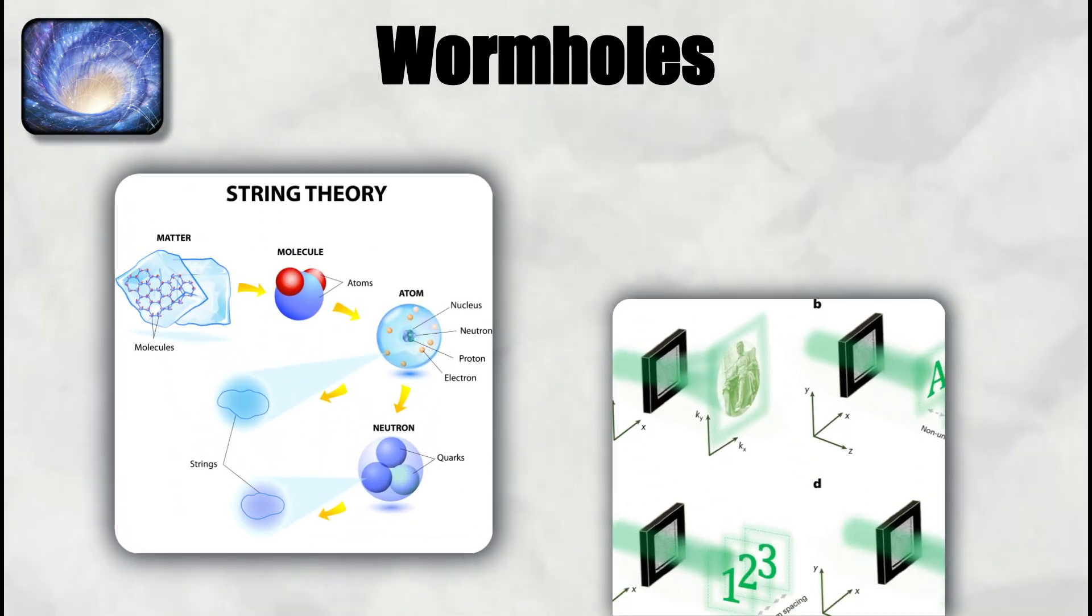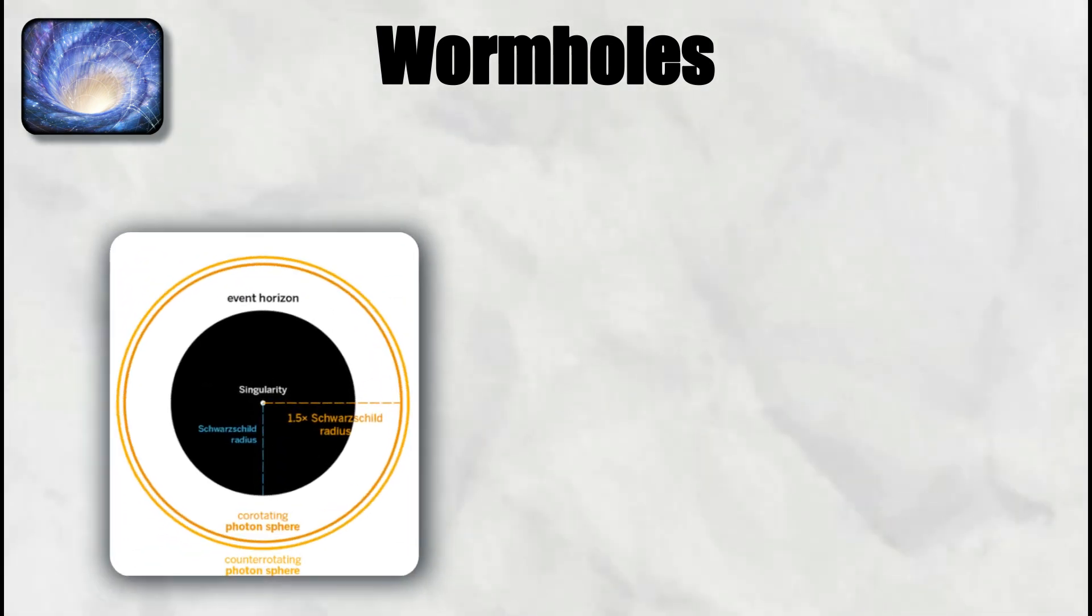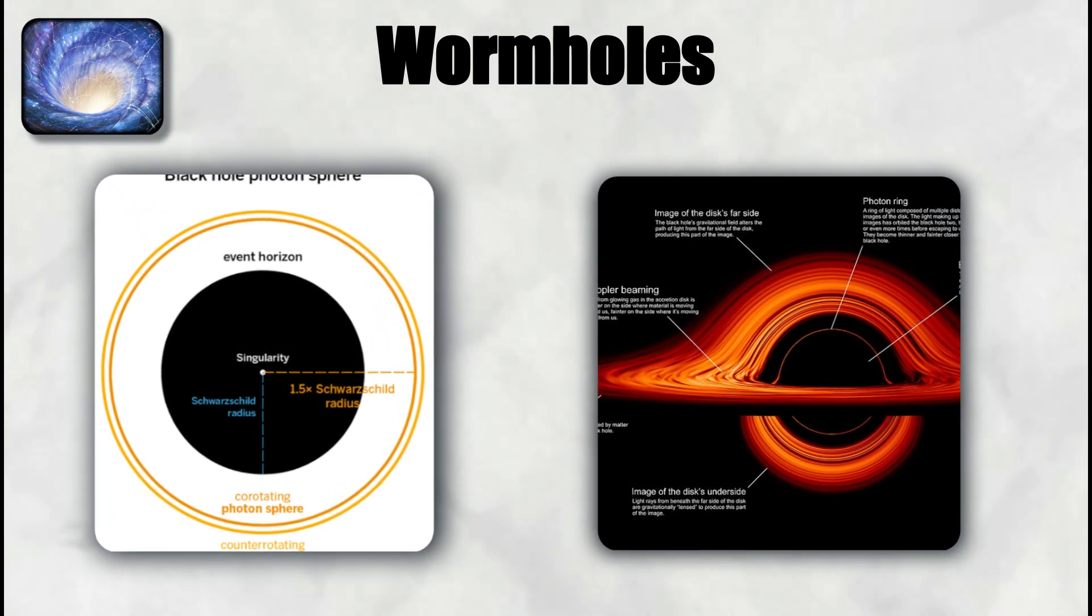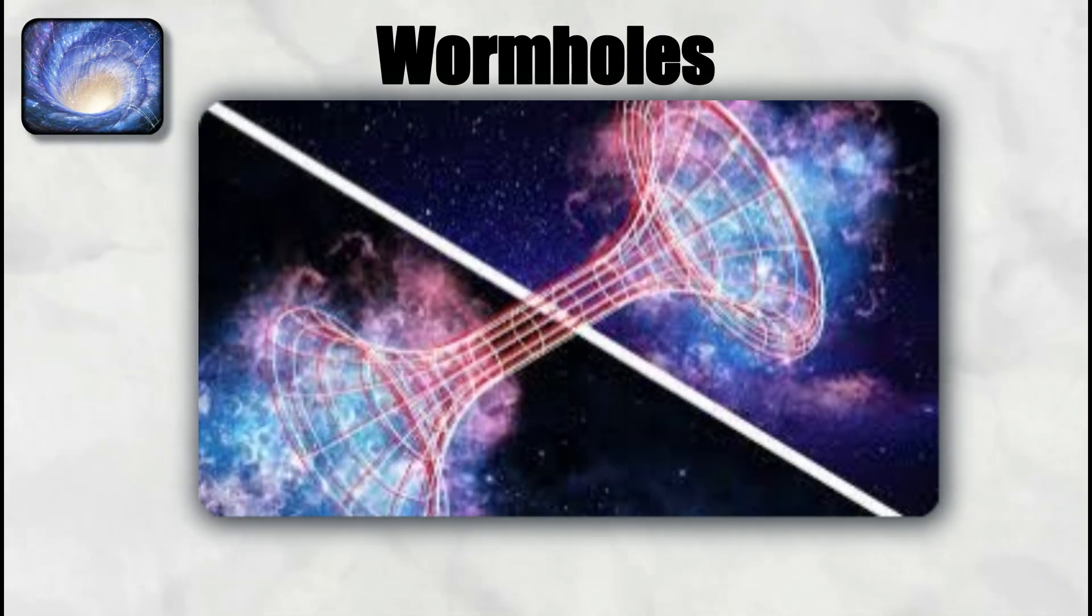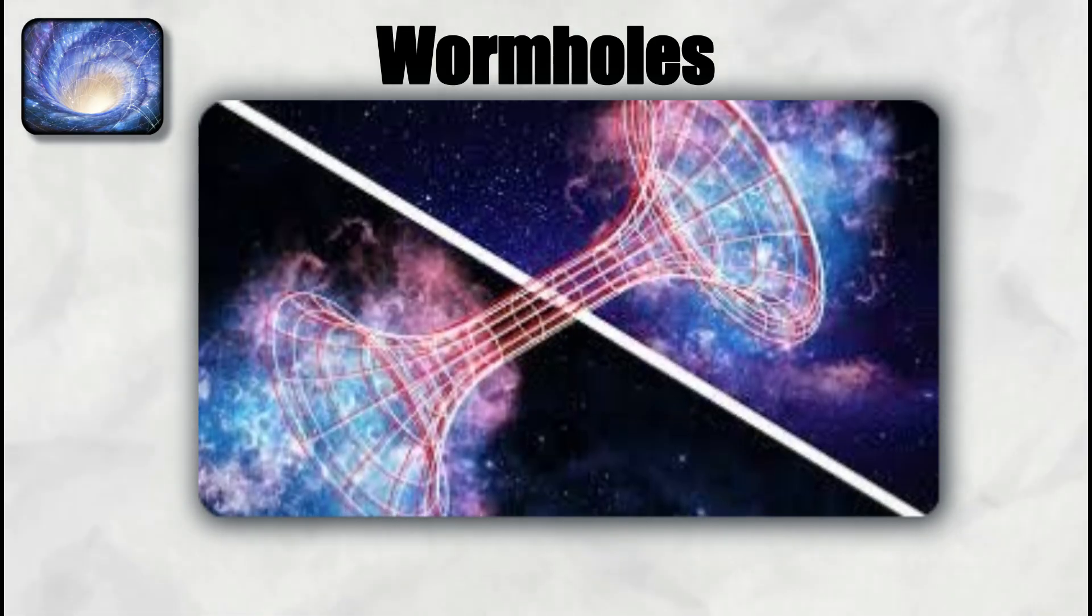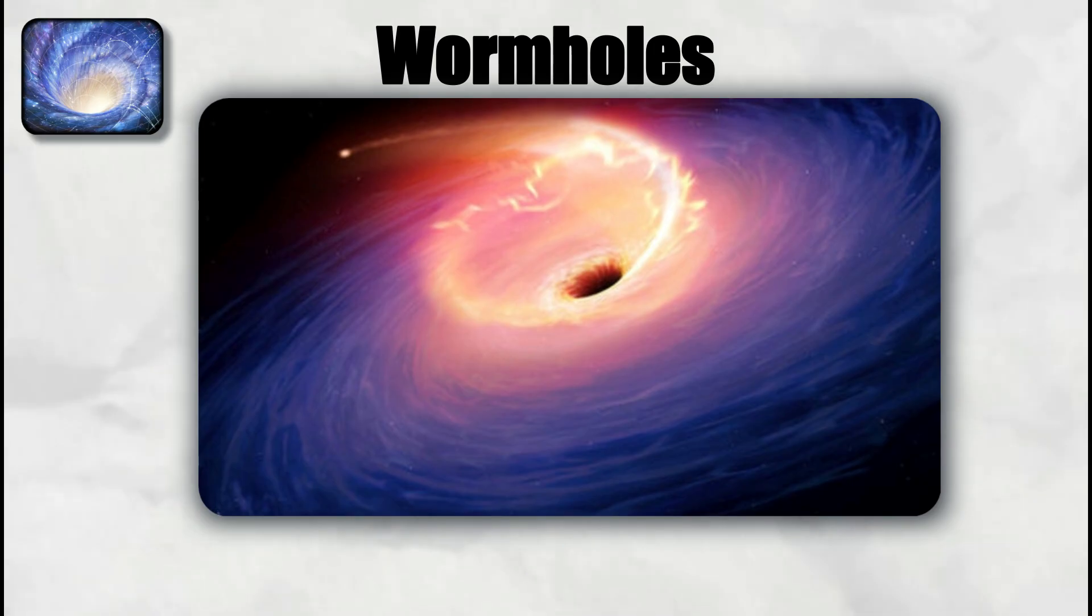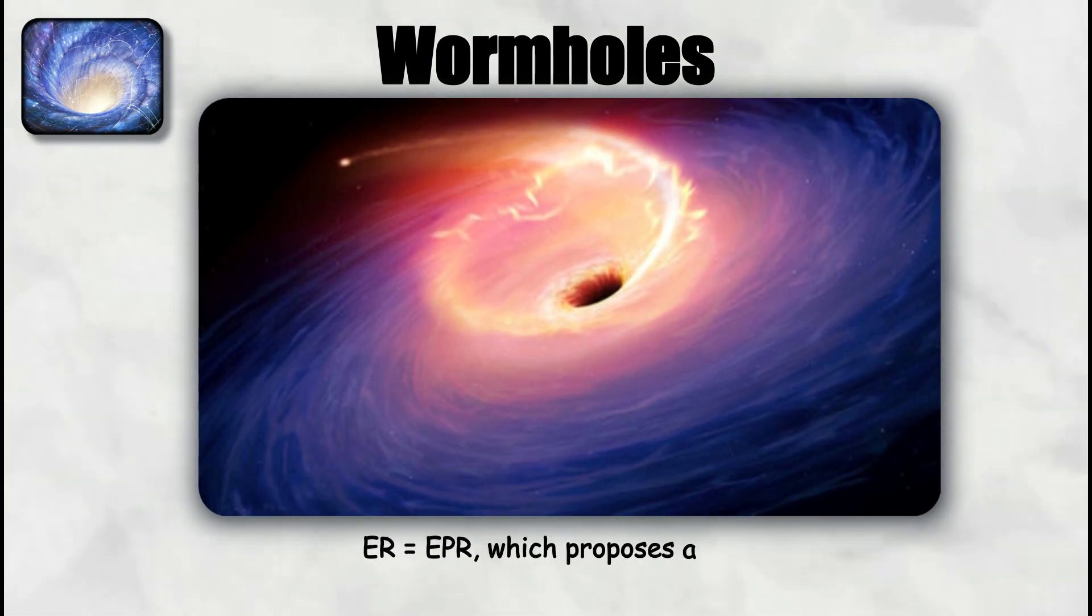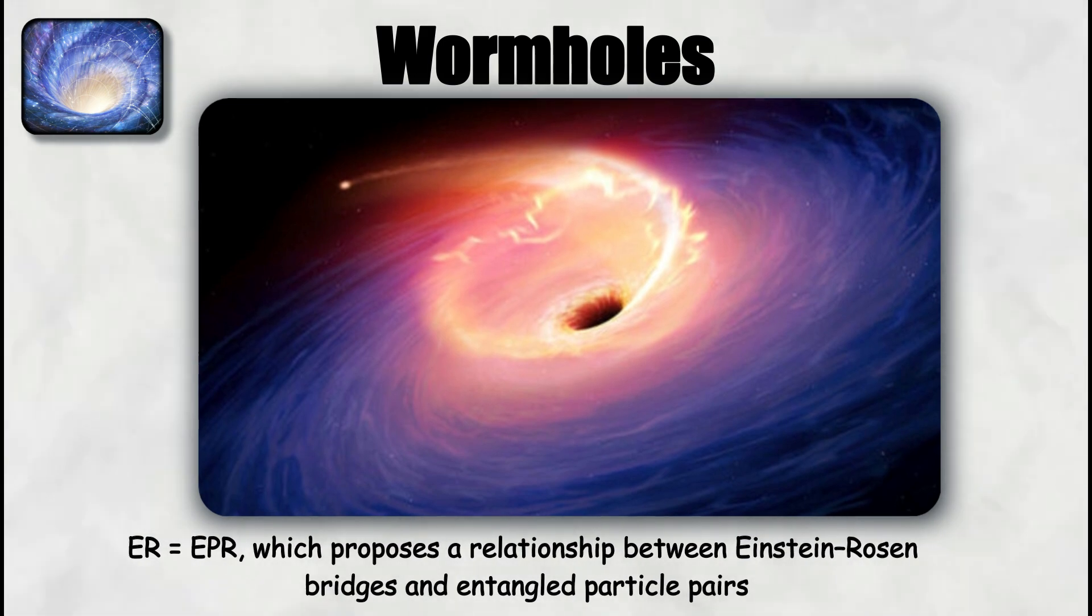In string theory and holographic approaches, wormholes appear in more abstract forms. The AdS/CFT correspondence links certain wormhole geometries in anti-de Sitter space to entanglement patterns in a conformal field theory. In this picture, wormholes are not literal tunnels you can fly through but mathematical reflections of deep connections between quantum information and geometry. This is often summarized by the slogan ER equals EPR, which proposes a relationship between Einstein-Rosen bridges and entangled particle pairs.